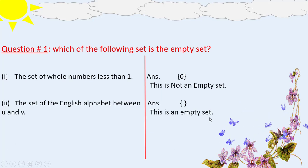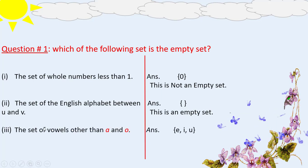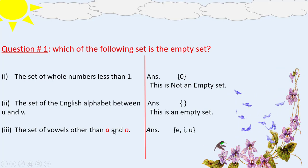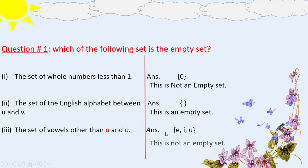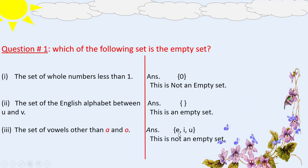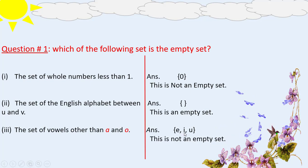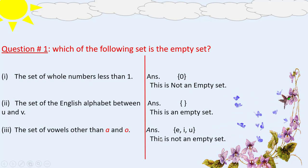The third part is the set of vowels other than A and O. The vowels other than A and O include E, I, and U. Since we can write elements for this set, it is not an empty set.